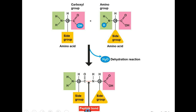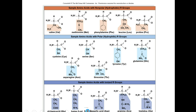Once again, like all of the molecules we've been discussing, proteins are formed by the release of two hydrogens and an oxygen to form water. We call this the dehydration or condensation reaction. This slide is showing some of the amino acids. Notice the R group is what makes each amino acid different from one another.